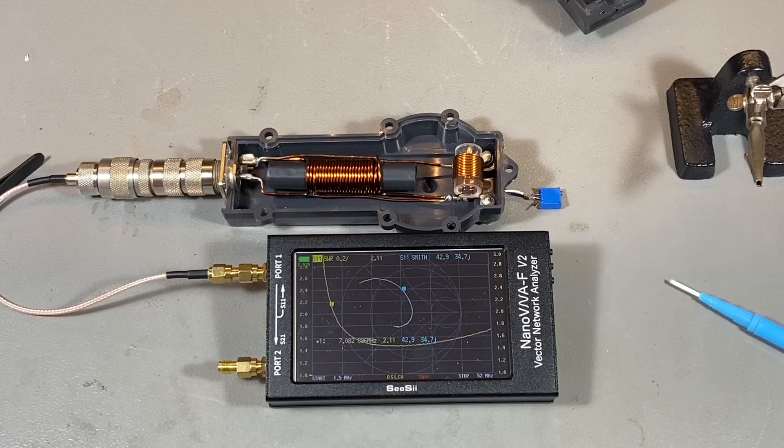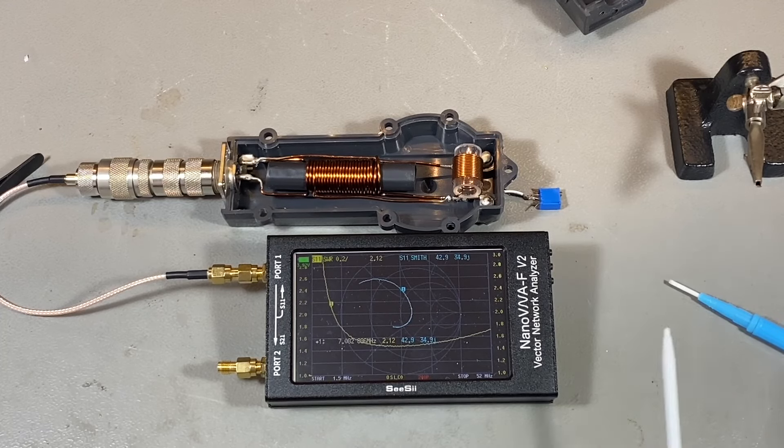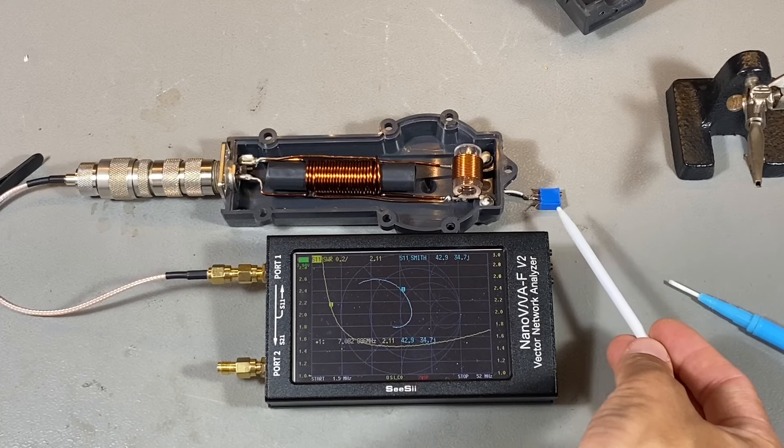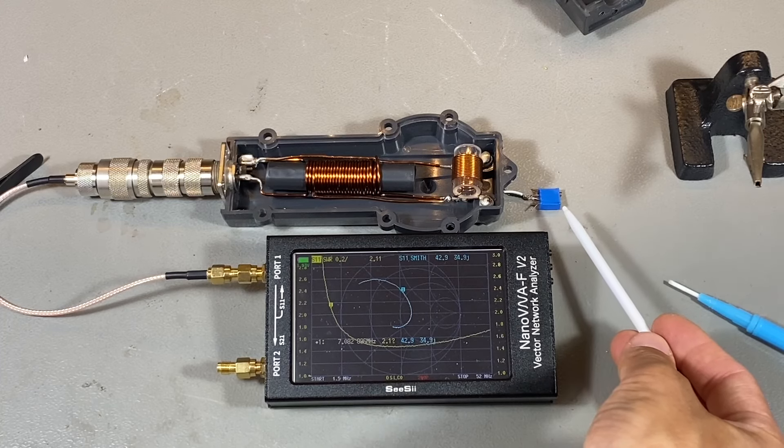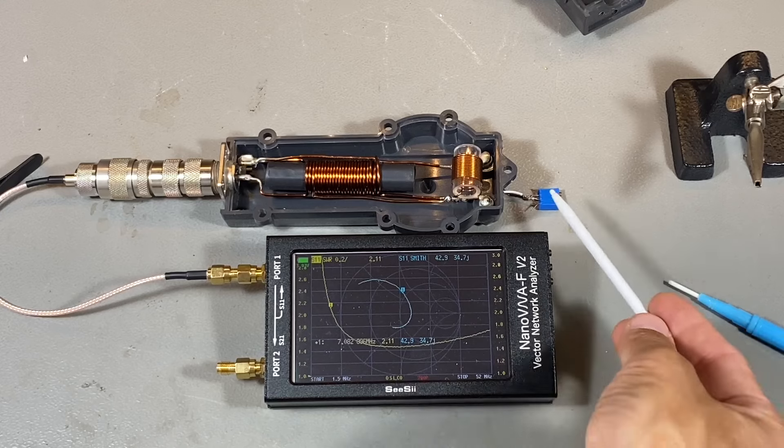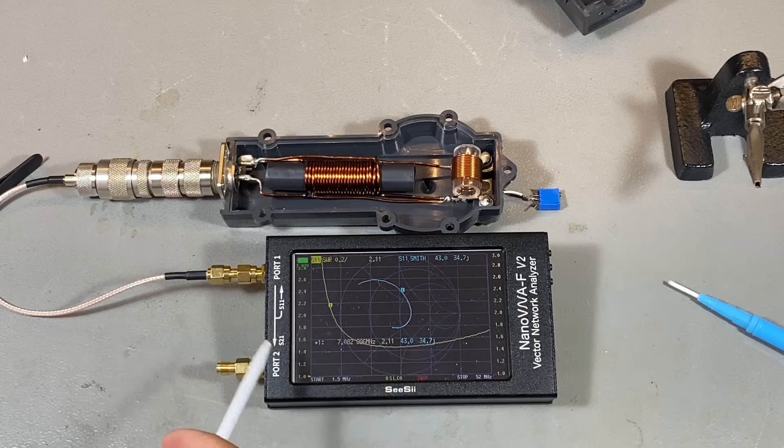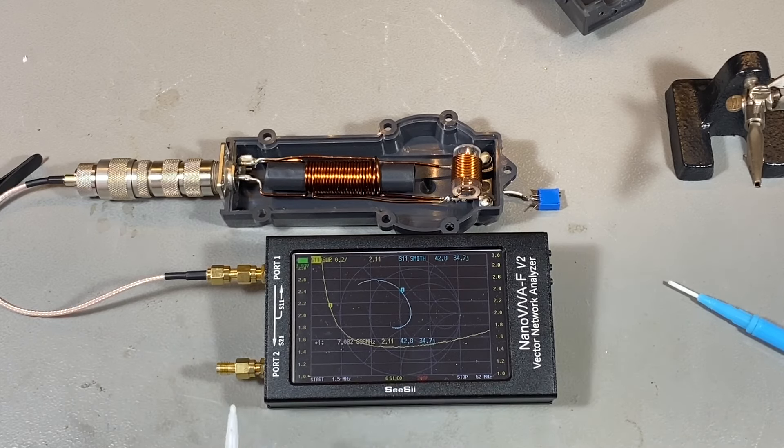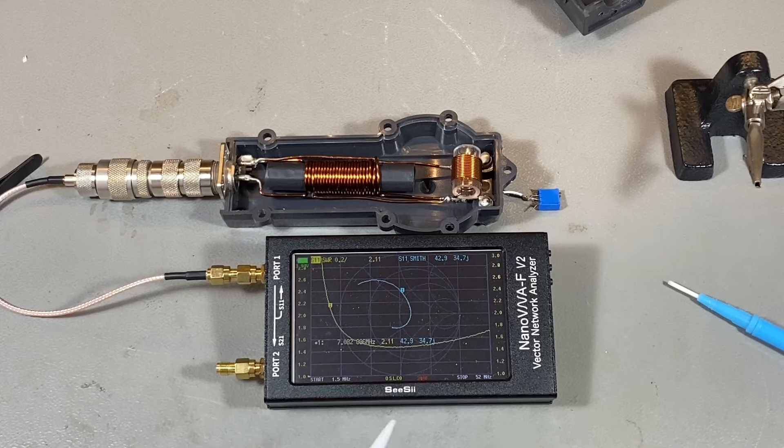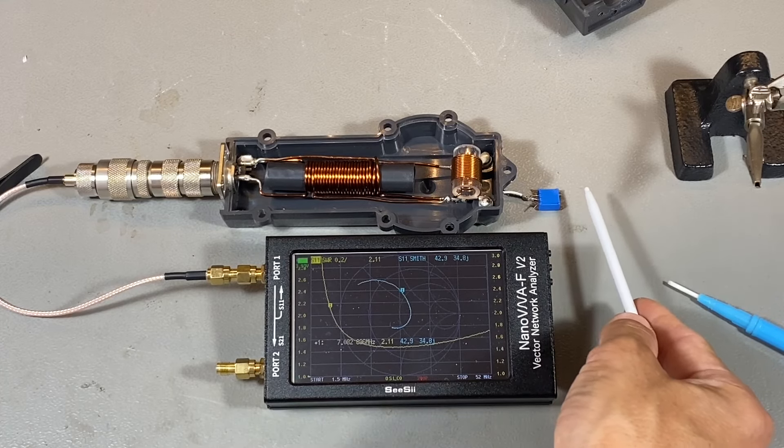Before I remove the coil, I connect to the terminals this multi-turn trimmer resistor. And I want to see, basically, if I can have a better response, better curve for the SWR. And then I'll remove it and measure the value, the corresponding value.